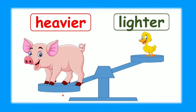We also have a picture with a pig and a duck. One object has to be heavier and the other has to be lighter. In this case the pig is heavier than the duck, or we can say the duck is lighter than the pig.